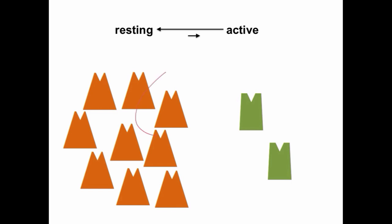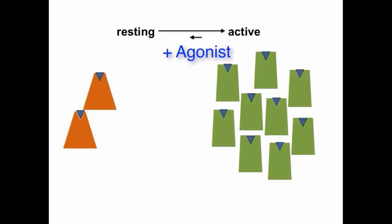If we consider a population of receptors, they're in either a resting or an active conformation, and they're in equilibrium between the two. If we add an agonist to these receptors, the population of receptors that are active is now much greater. So the equilibrium gets shifted from inactive to an active conformation.